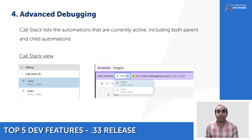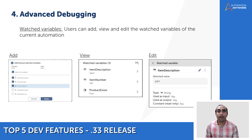The call stack also allows you to navigate between the parent and child automations. It lists the automations that are currently active — both parent and child — along with the line number and the folder in which they reside.